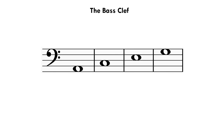This is what the notes look like when it's just the spaces. The first note from the bottom is A, then C, then E, and then we have G. A phrase that you can use to remember the order of the notes is 'All Cows Eat Grass.' Again, you can come up with your own phrase if that's easier for you.